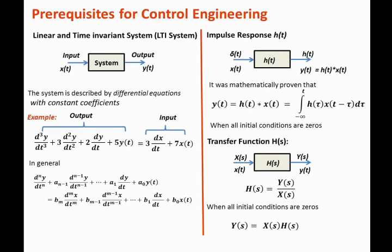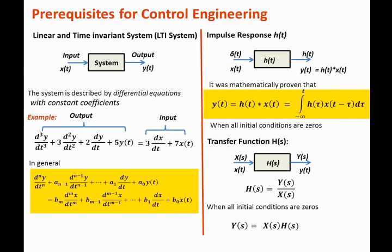Control engineers are very comfortable dealing in the Laplace domain because analyzing systems there becomes much easier. To summarize: linear and time-invariant systems are described by differential equations with constant coefficients; the output may be obtained by solving the differential equation, by computing the convolution of the impulse response with the input, or by multiplying the transfer function by the input in the Laplace domain. These are three fundamental concepts for success in control engineering — please understand and memorize them.